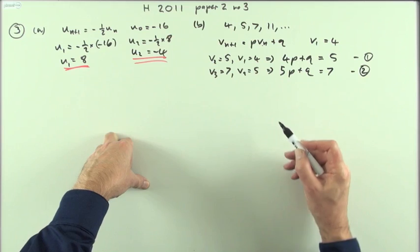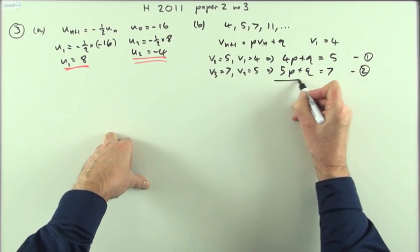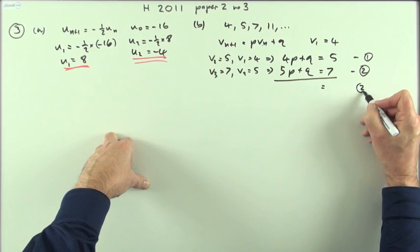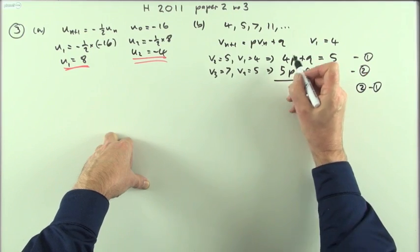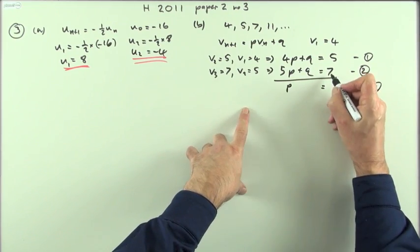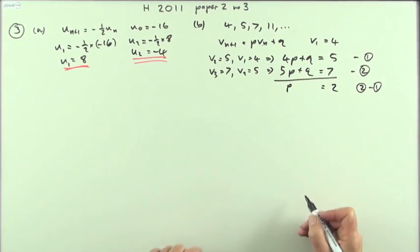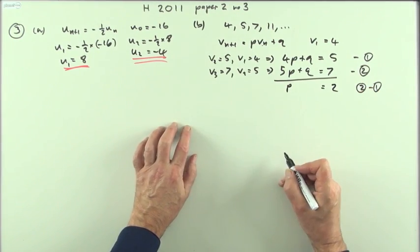Simply subtracting them will get rid of Q. I'll put it down this way. I'm going to write 2 take away 1 just to avoid negatives, bottom take away the top. That means I've got a single P. Q's go. 7 take away 5 is 2. Straight away, there's your answer. I know that P equals 2.